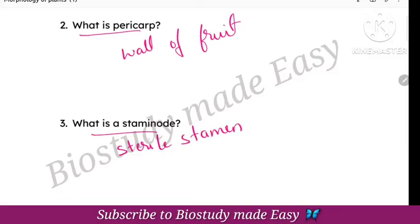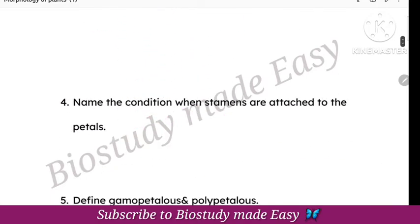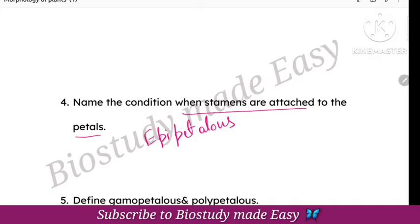Next, fill in the blanks or MCQ. When stamens are attached to petals, this condition is called Epipetalous. When stamens are attached to the Perianth, this condition is also called Epipetalous.